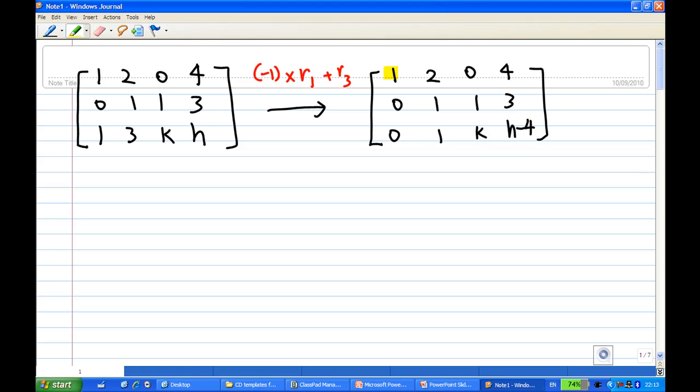So I have a leading 1 in the first row and also have a leading 1 in the second row. Now I have to make sure that entries below leading 1 and above leading 1 are 0. So I continue. Second row times minus 1, add to the third row. The third row will become (0, 0, k-1, h-7).